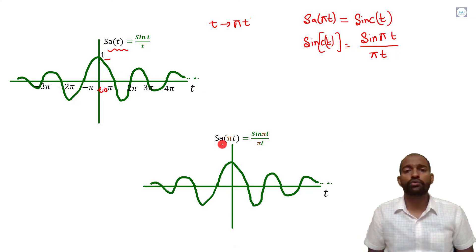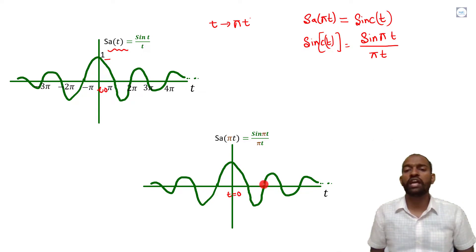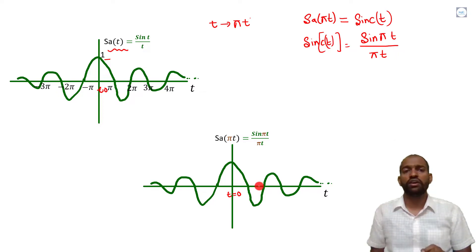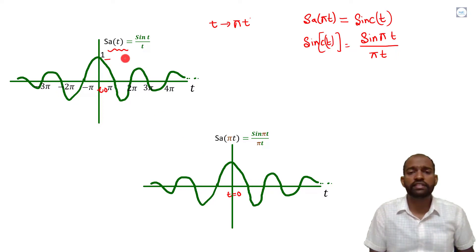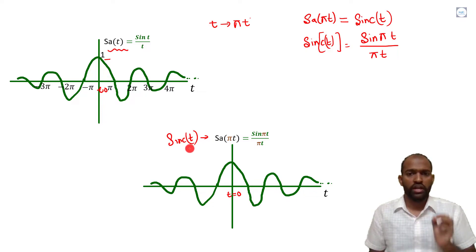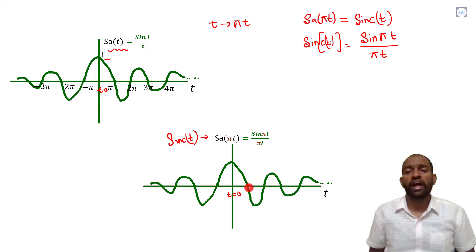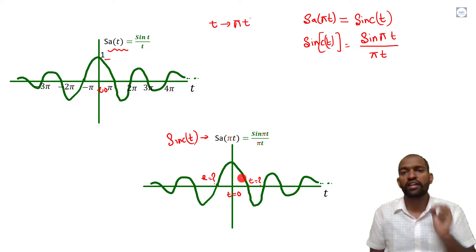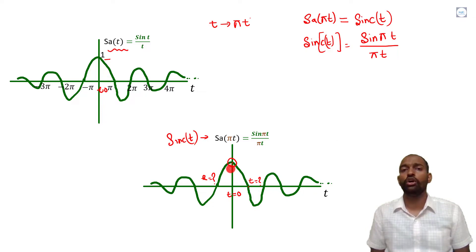Now you may ask: what is the difference between the sampling signal and the sinc function? The difference will be the points at which the sinc function is 0 — that is, the values of t at which sinc(t) equals 0. These values are different from the sampling signal. We will also recheck what the peak amplitude is, which is at t equal to 0. So, let's check.